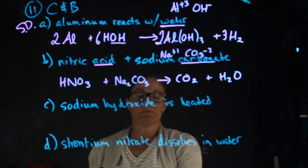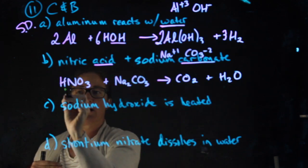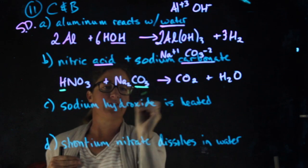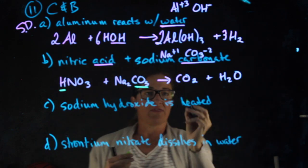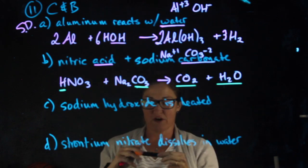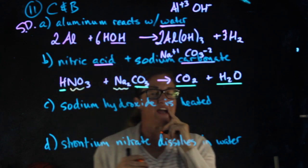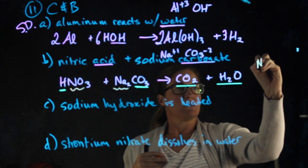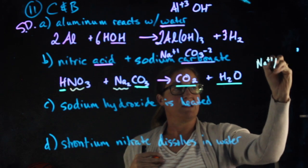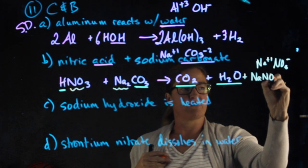When this reaction proceeds, the carbon dioxide and the water come from the hydrogen and the carbonate. So my third product, or what we call the leftovers, is going to be the combination of the sodium and the nitrate. Sodium is a plus one, nitrate is a minus one. My third product is NaNO3.